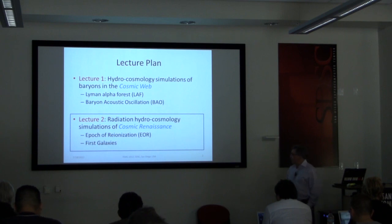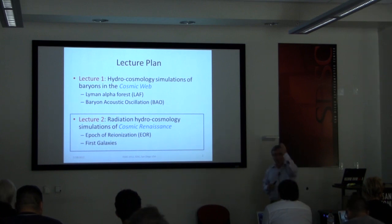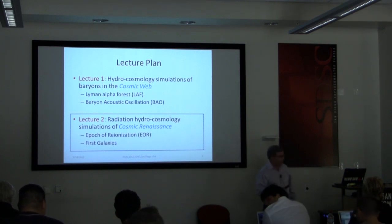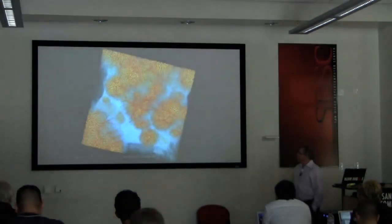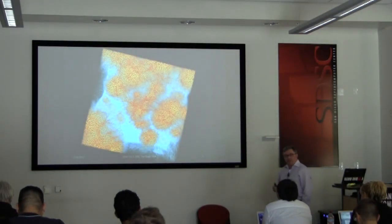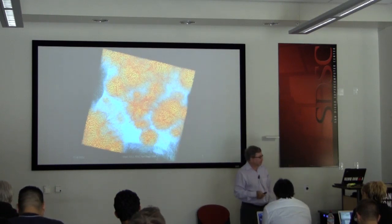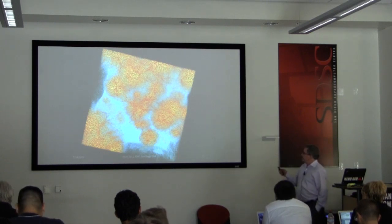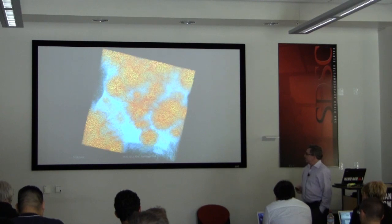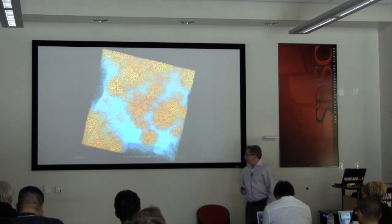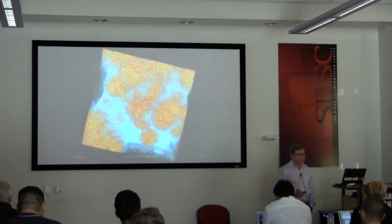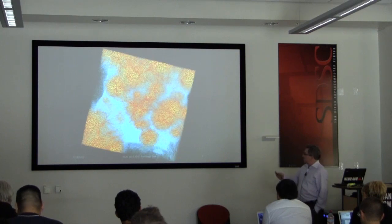So this is the second lecture. Today I'm going to talk about radiation hydrodynamical cosmology simulations of the cosmic renaissance. And this gets to the epoch of reionization and first galaxies. This is what I'm working on right now. And I'll be showing quite a bit of numerical results that are the thesis research of Jeffrey So. And these are a completely new, different kind of simulation in the history of computational astrophysics. This is an example of a simulation of cosmic reionization. Here you're looking at 1/64th of the volume that's been simulated.